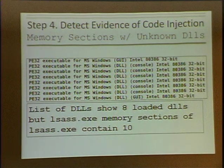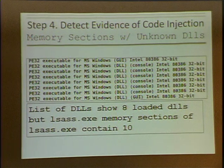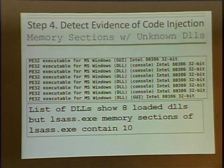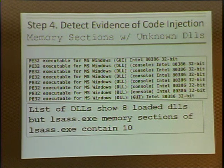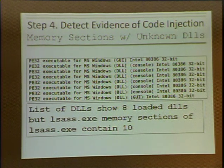Step four in my six-step process: detecting injected code. I'm dumping all the memory sections of a particular process. I told you evil.exe is highly suspicious. In this case I'm looking at lsas.exe — there's actually a second lsas running on this machine I'm investigating. I dump all memory sections and compare the portable executables I find there to the ones supposed to be there per the DLL list. The DLL list told me 8 DLLs were supposed to be loaded, but when I dumped the memory sections I actually found 10.